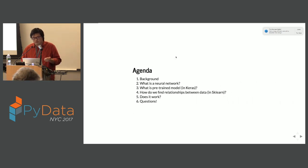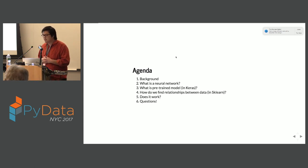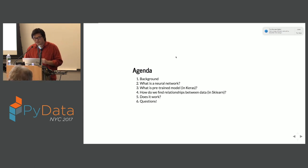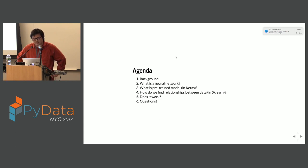A quick overview of what's going on: I'm going to talk a little bit about the background and why I'm interested in this problem, what a neural network is, how to use a pre-trained neural network in Keras, how we find the relationships between them using scikit-learn's K-Nearest Neighbors, and then we'll see if it works and go over some questions.